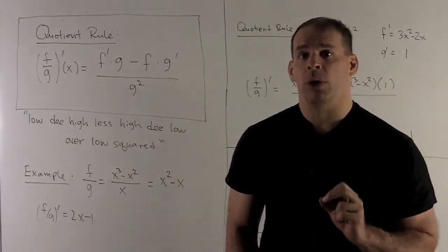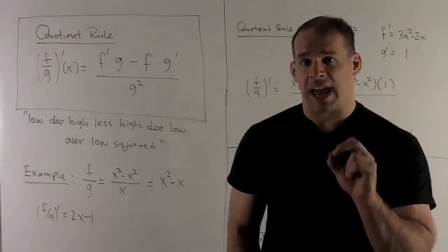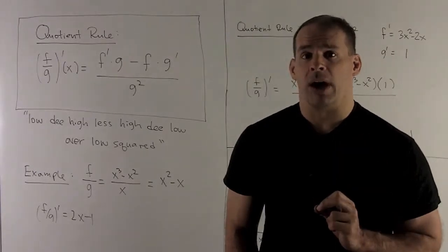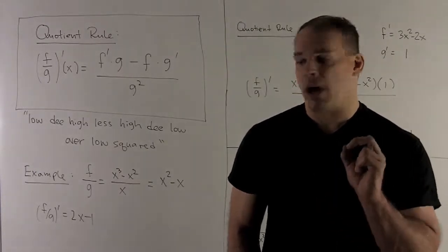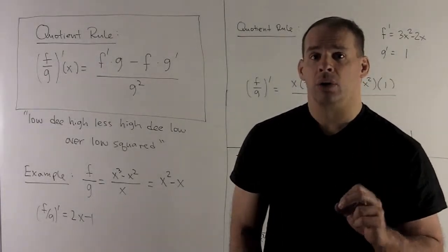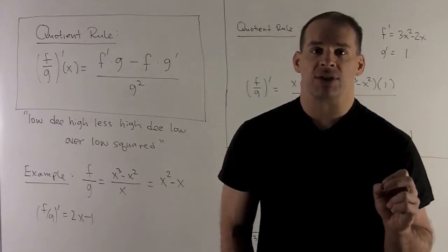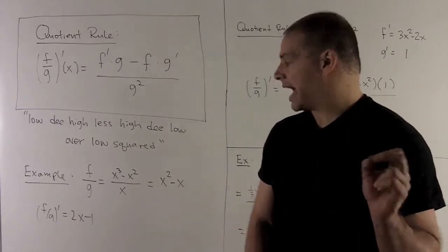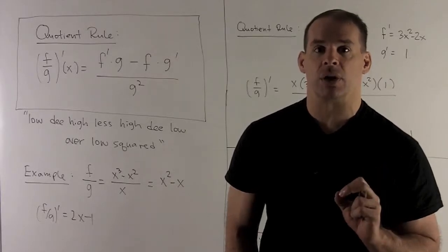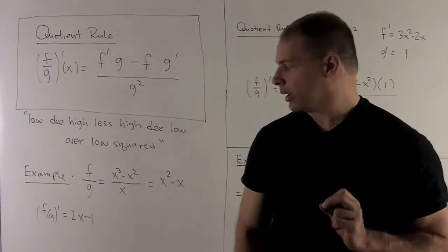First, we do an example that we can do without using the quotient rule, just to check that it agrees with something we already know. The function is (x³ - x²) / x. We can simplify this to x² - x (throwing away the point x = 0 since we can't divide by zero). Taking the derivative of what's left gives 2x - 1.